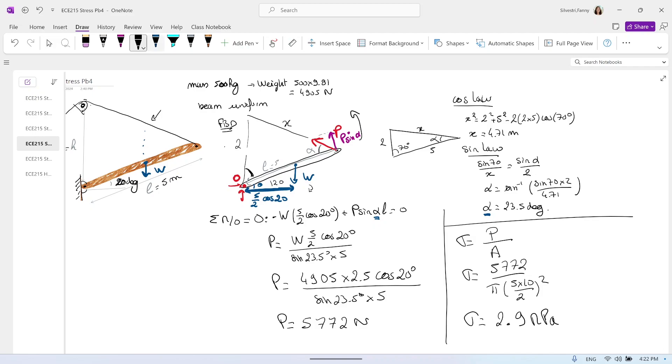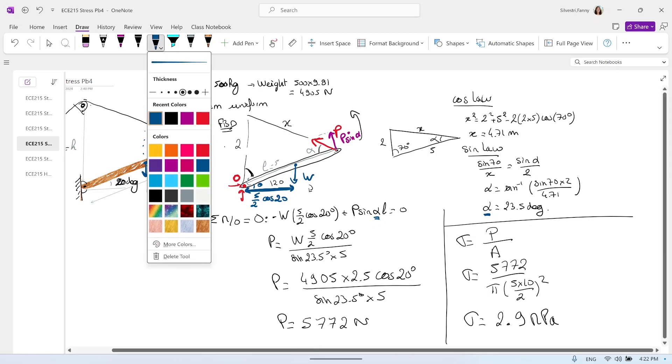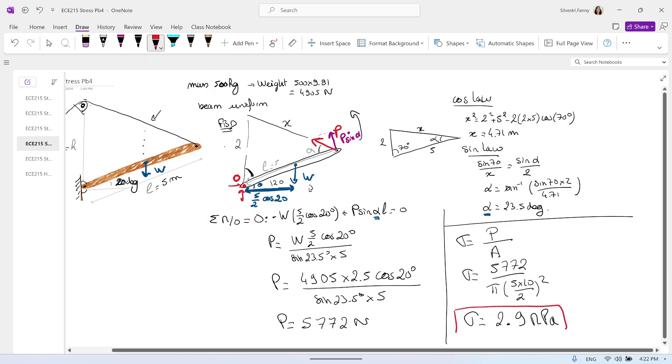So this is the answer for the beam at 20 degrees. So this is with 500 kilograms and the length of 5 meters and the pulley that is attached at 2 meters. So you can see how if I change the distance from the pulley, the weight of the beam or even the angle, that will change the sigma. And you will all have different numbers. So we could compare and see what has the most influence on it. Hope that helps. Bye.